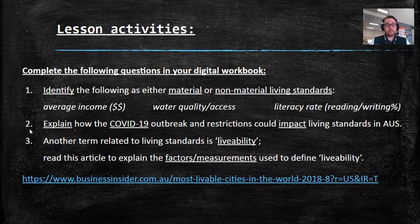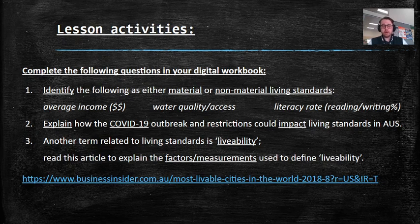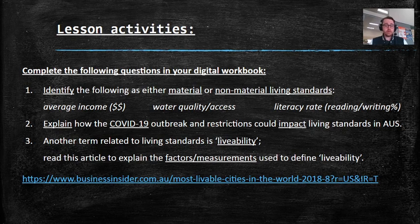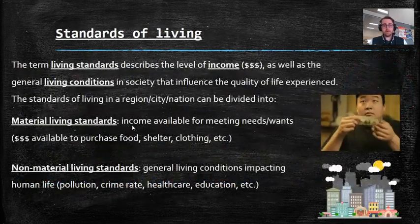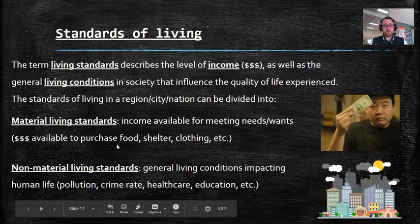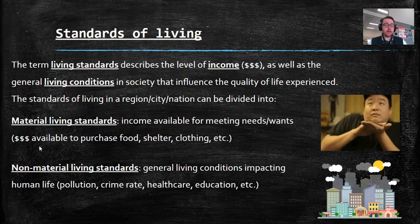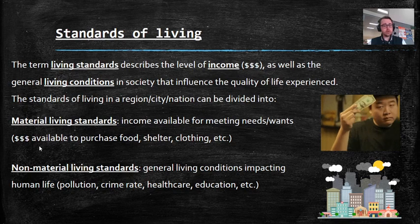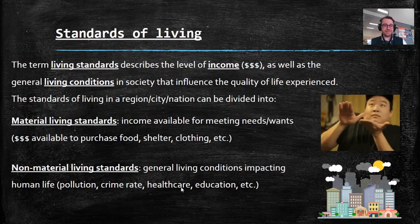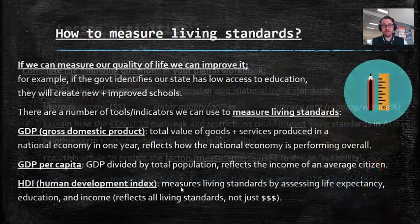Question two: explain how the COVID-19 coronavirus outbreak and restrictions could impact living standards in Australia. There are no wrong answers — there are probably a lot of right answers. Think about what impacts your quality of life and whether coronavirus has affected those things. Has coronavirus impacted the amount of money that some people have? People have been put out of jobs. Has coronavirus impacted the health of our city or country? Absolutely — so think about those things.